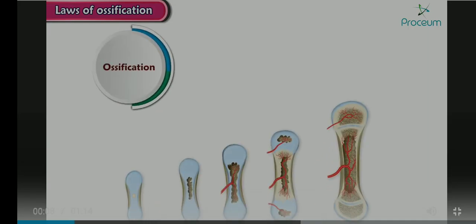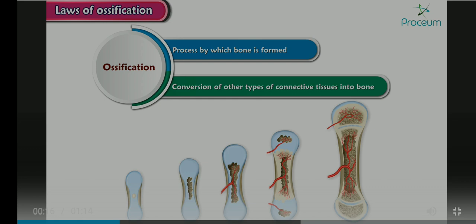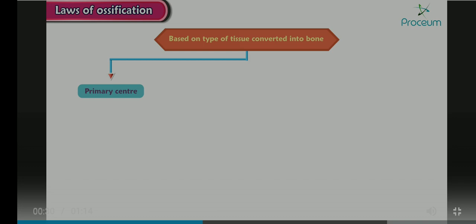Ossification is the process by which bone is formed. The formation of bone is in fact the conversion of other types of connective tissues into bone. Based on the type of tissue converted into bone, laws of ossification are explained further. The primary center of ossification is single and appears before birth.